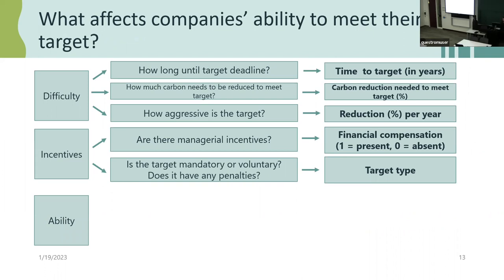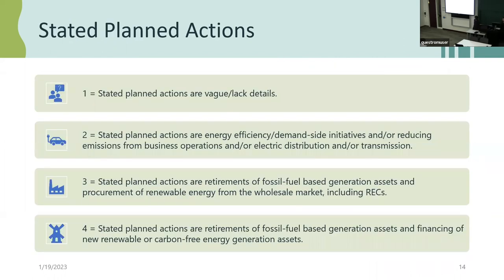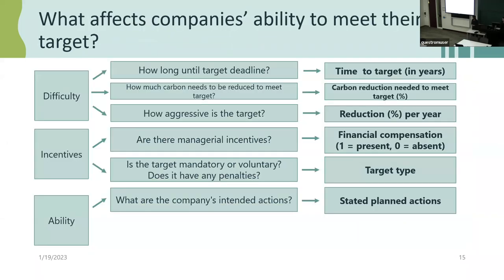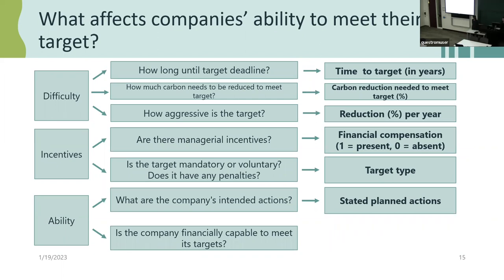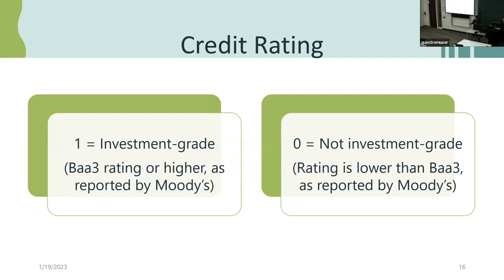The third theme is the ability of the company to meet its target. What are the company's intended actions — the stated planned actions that we saw with PNM — categorized into four buckets: coded as one if the plans are very vague; two if reductions are mainly in business operations or distribution/transmission components; and three and four related to the elimination or retirement of fossil fuel-based generation assets, and how they replace that energy either through procurement of renewable energy from the market or purchasing RECs, or actually investing in new assets. Lastly, is the company financially capable to meet its targets? We evaluate that with its debt ratio and its credit rating, using two buckets: whether it's investment grade or non-investment grade.